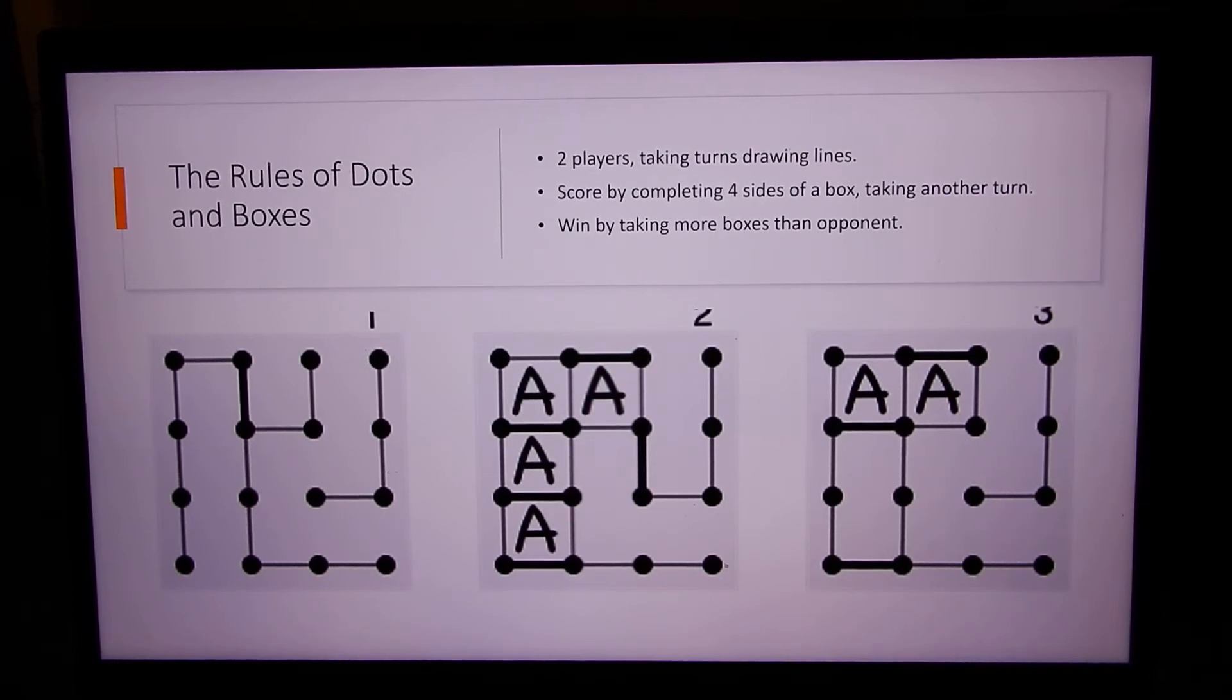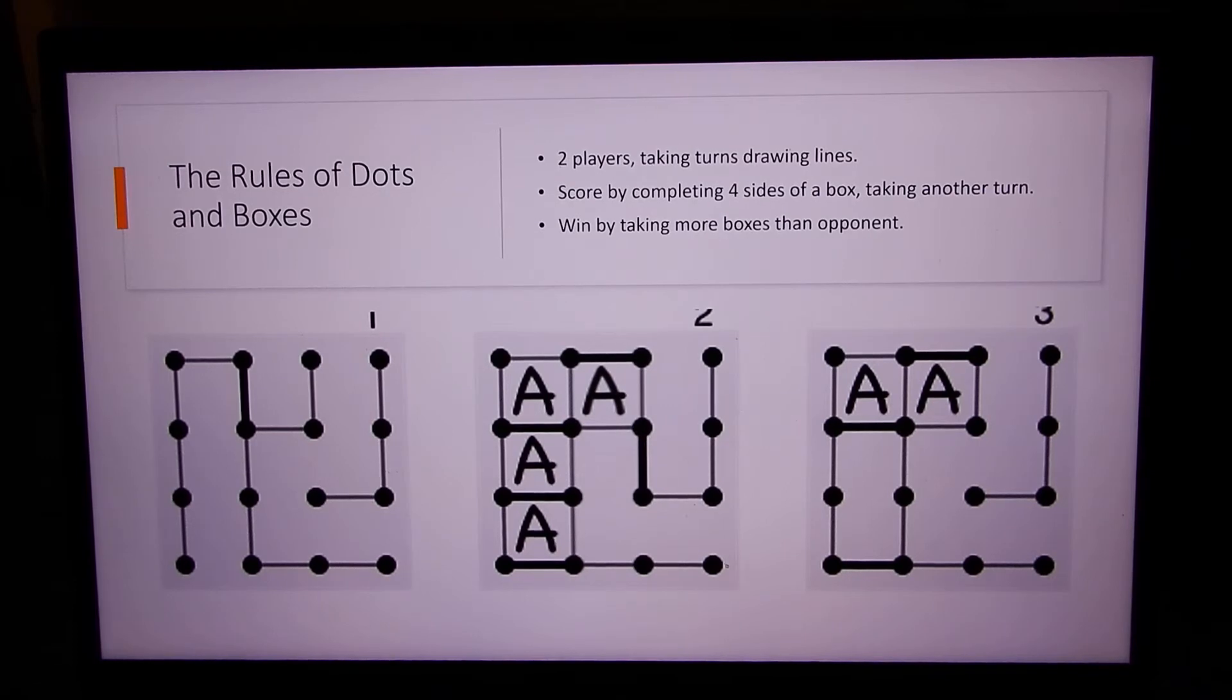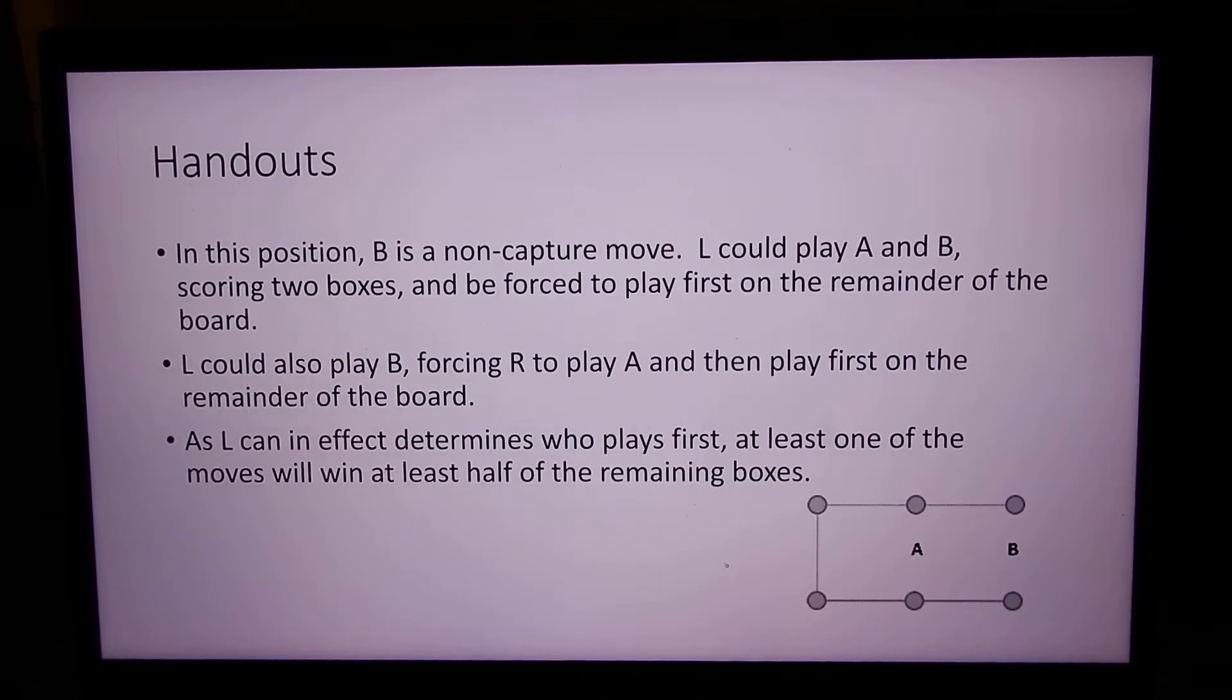Dots and Boxes is a two-player game. The two players take turns drawing lines, and you score by completing four sides of a box. If you score, you take another turn, and the winner is whoever takes the most number of boxes.